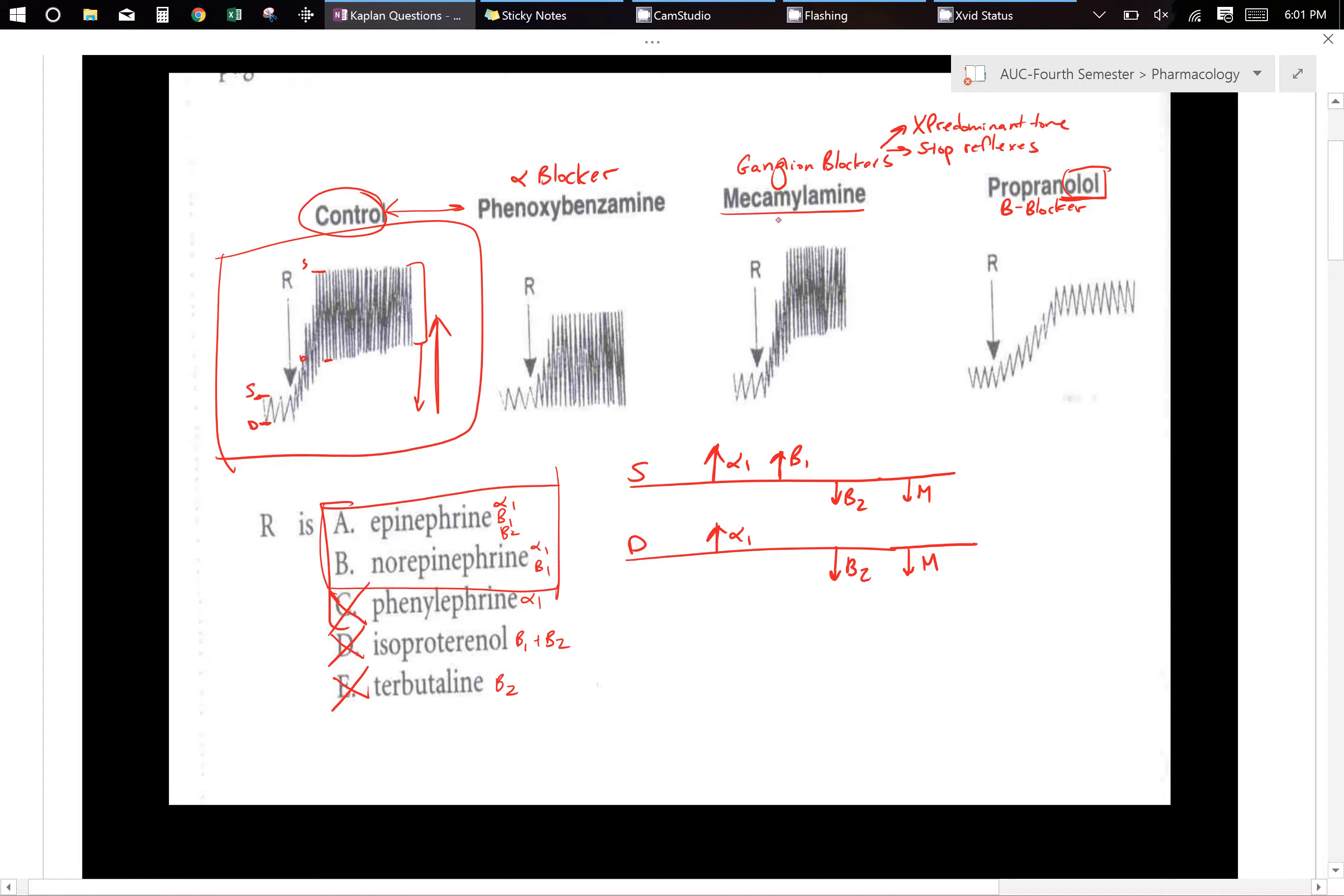The first thing I look at is mecamylamine. So mecamylamine is a ganglion blocker. So what it will do, it will stop your reflexes.